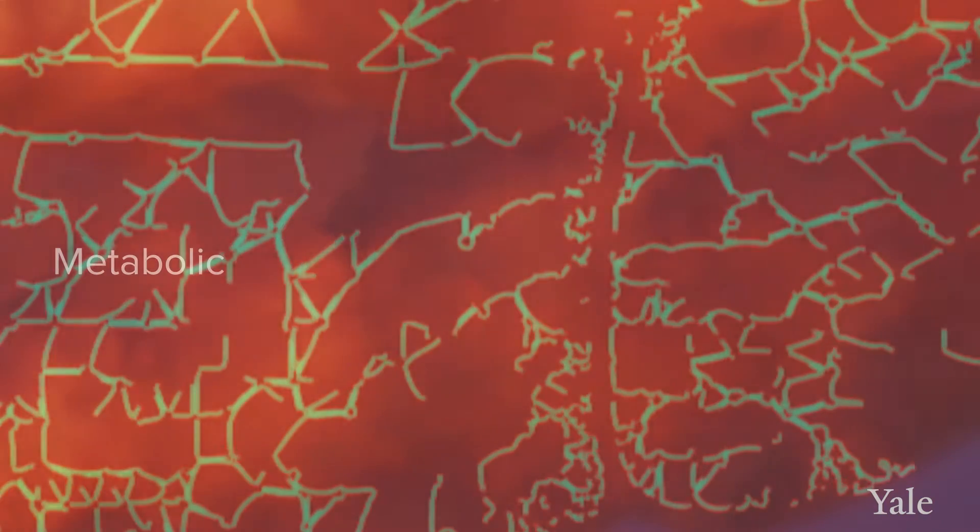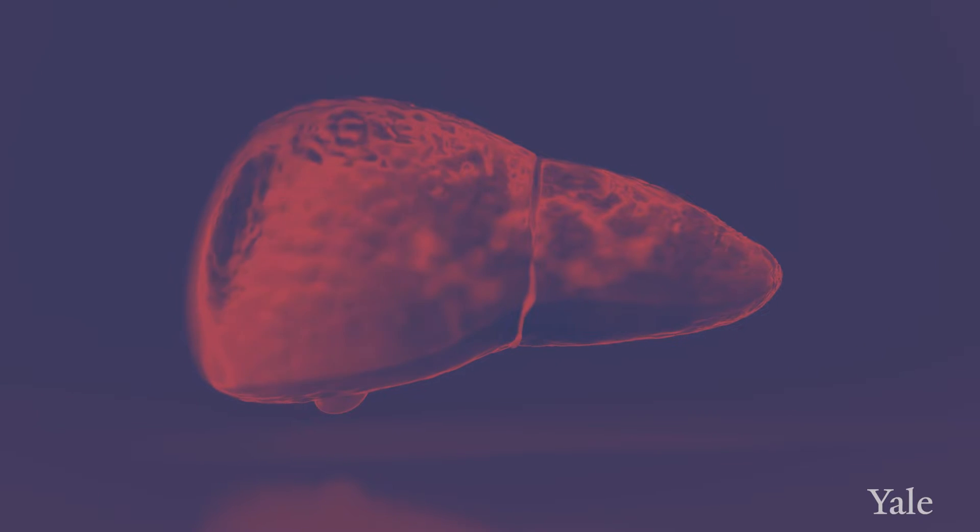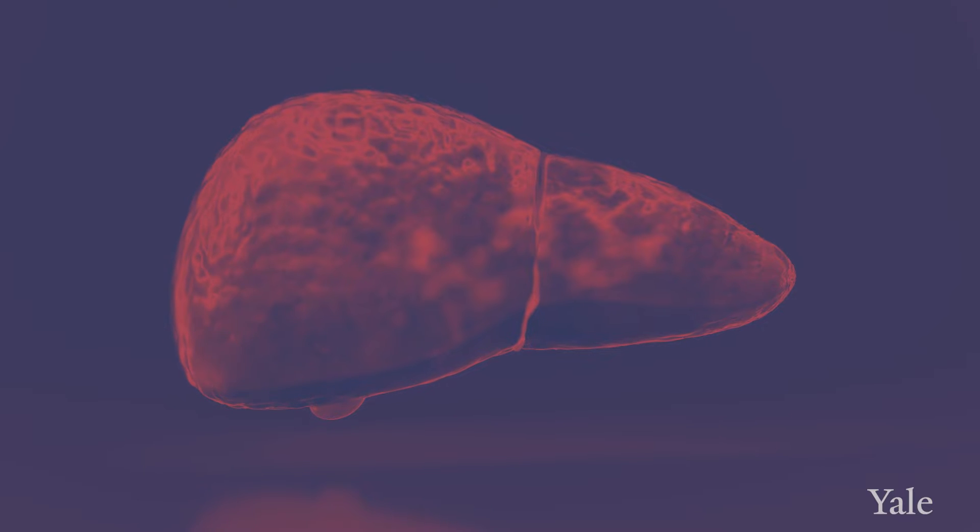MASH is metabolic dysfunction associated steatohepatitis. It's a condition where chronic overnutrition causes the liver to store excess nutrients, resulting in both fat and inflammation in the liver. If that fat and inflammation persist for long periods of time, scar tissue starts to build up and can lead to cirrhosis of the liver, which is a very severe and unfortunately life-threatening situation.